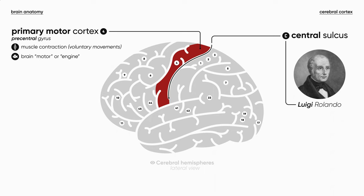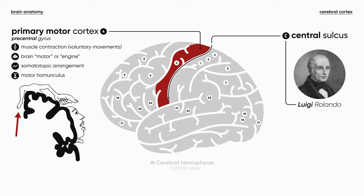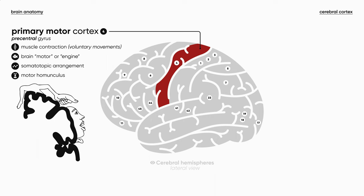The primary motor cortex is organized in a particular way of somatotopic arrangement. Its upper and medial parts are responsible for the movement of the lower limbs, and the lower and lateral parts respectively for the head and neck. This particular pattern, this concept, is called the Penfield's motor homunculus.